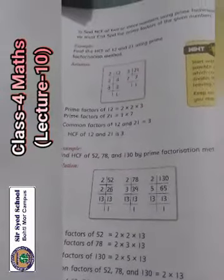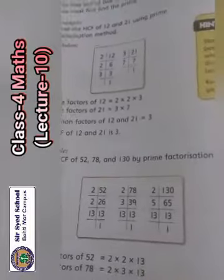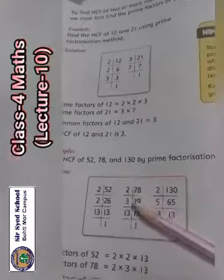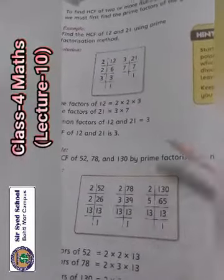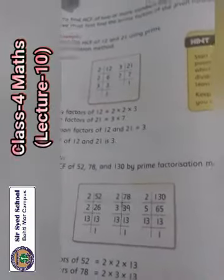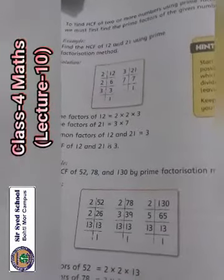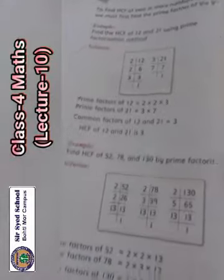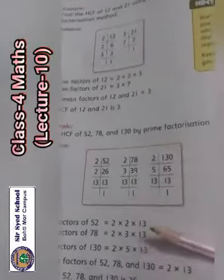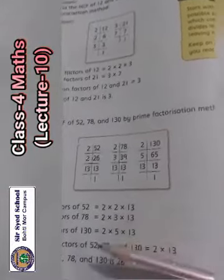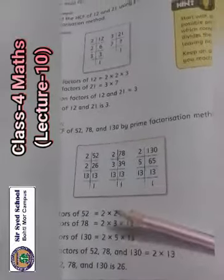Now you have 3 values given in the next example: 52, 78, and 130. Prime numbers divided: 52 is 2, 2, 13. 78 is 2, 3, 13. 130 is 2, 5, 13. Common factors are 2 and 13.